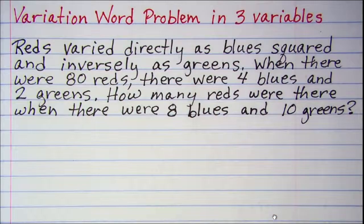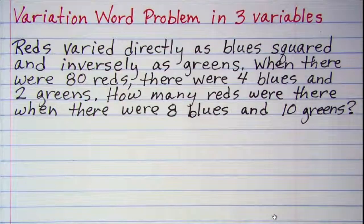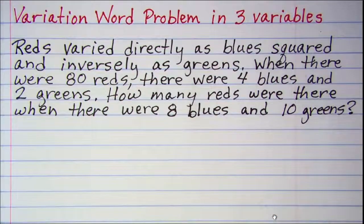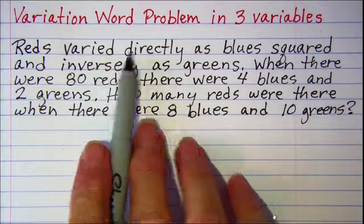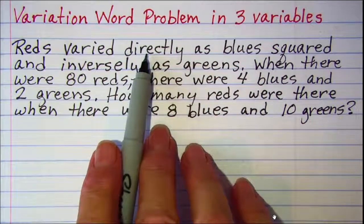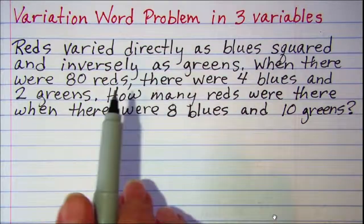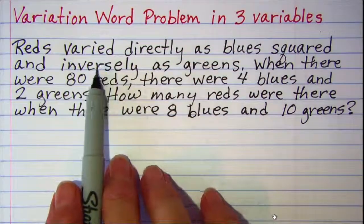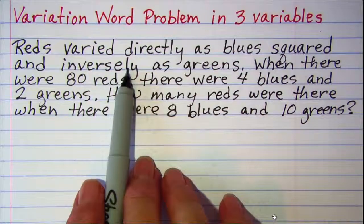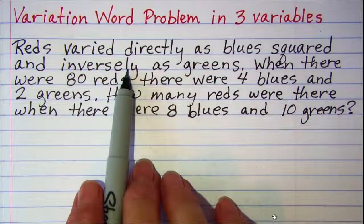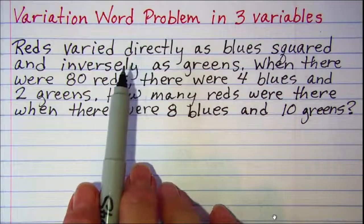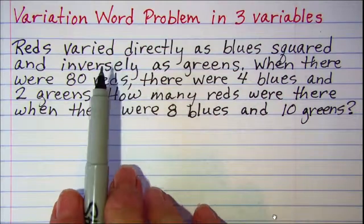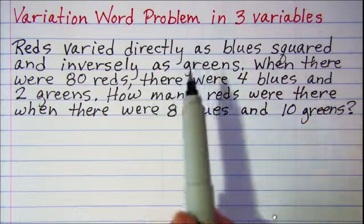Now I'm going to use R for reds and B for blues and G for greens. The thing to remember when you're doing variation problems is direct variation or when it says varied directly you will multiply. And when it says inverse variation or varied inversely you'll be dividing. And always remember your constant of variation which I'll let that be K.